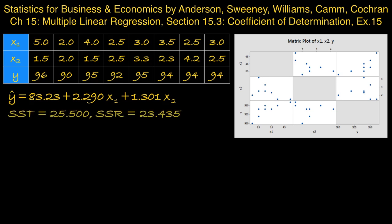And also, the Minitab output indicated that the total sum of squares is 25.500 and the sum of squares due to regression is 23.435.